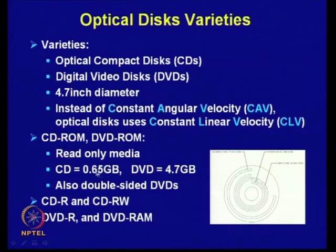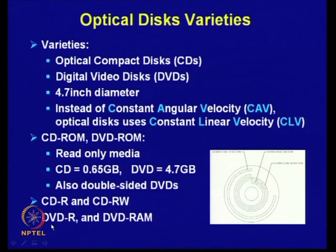Different types of optical media include: CDs with about 0.6 gigabytes capacity, DVDs with 4.7 gigabytes (very common), and double-sided DVDs. CD-R allows writing only once; CD-RW allows writing many times. Similarly, DVD-R and DVD-RAM variants exist. The key difference between CD-R and CD-RW is that CD-R is write-once while CD-RW supports multiple writes.